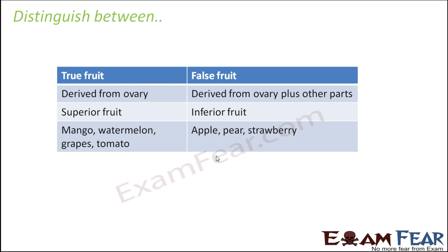Let us quickly distinguish between true fruit and false fruit. A true fruit is derived from the ovary, whereas a false fruit is derived from the ovary plus some other parts of the plant. A true fruit is a superior fruit, whereas a false fruit is an inferior fruit, because in a true fruit the ovary is the important part. Examples of true fruits are mango, watermelon, grapes, and tomato. Examples of false fruits are apple, pear, and strawberry.